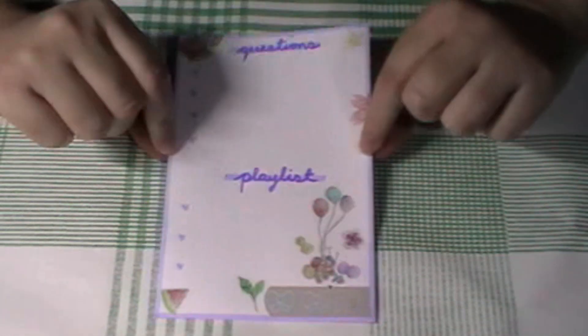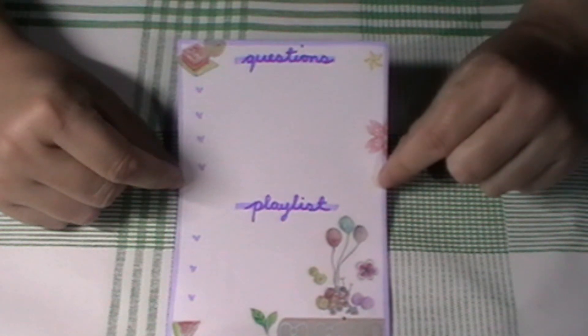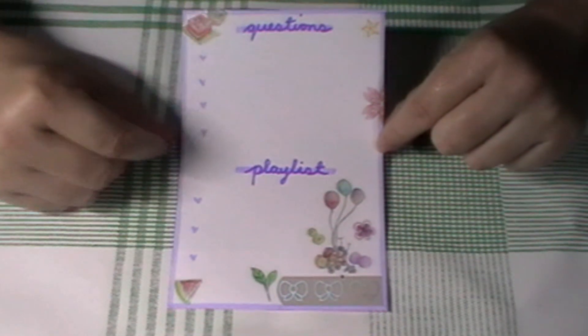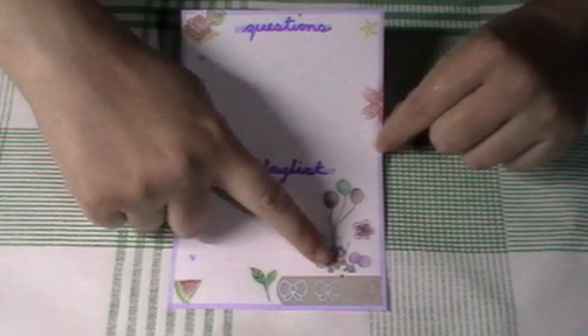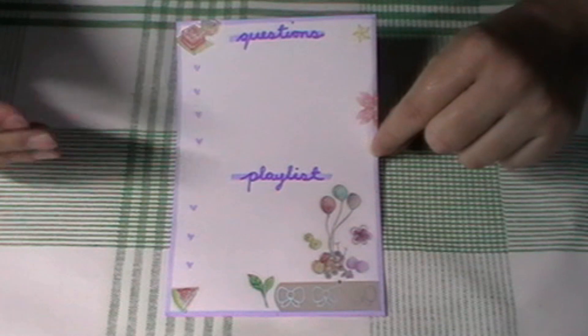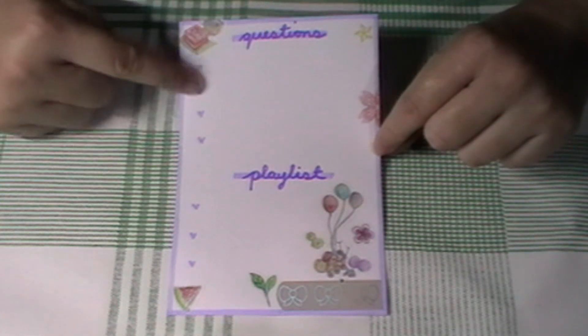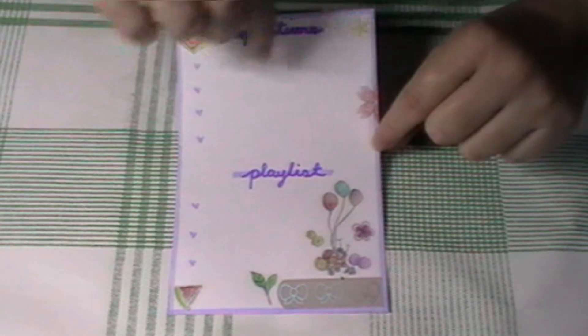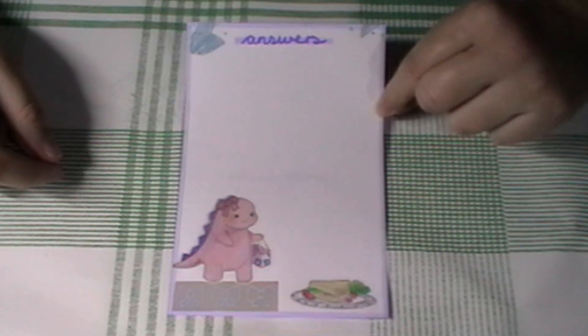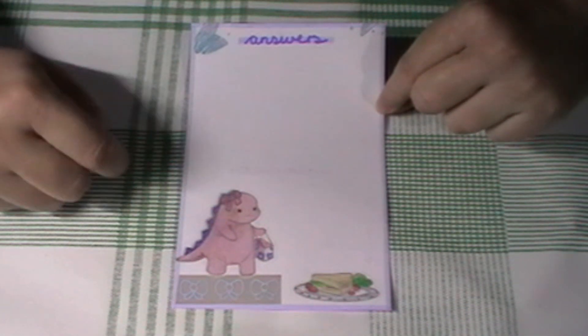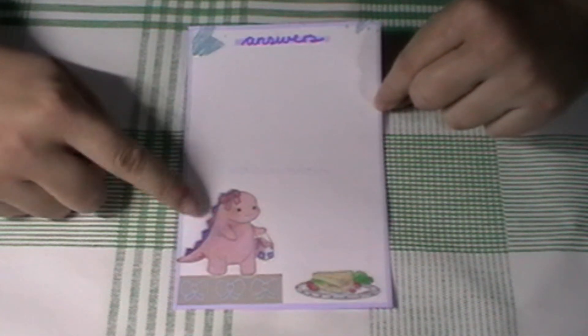I did a questions and playlist section. And again, I used some of the stickers off of the sheet. For some reason, there was a lot of food. I think it was like a dinosaur party-themed sticker sheet. And I used the Mildliner again for the bullet points. So, we have questions and playlist. And then, on the other side, we have the answers section.